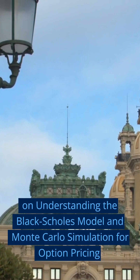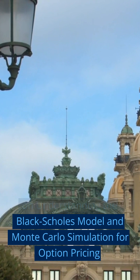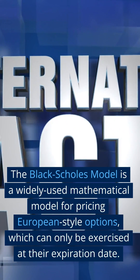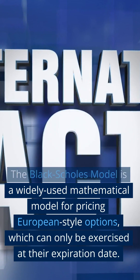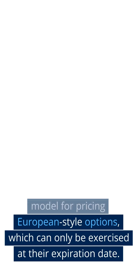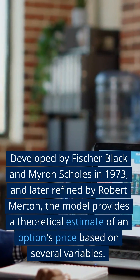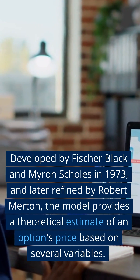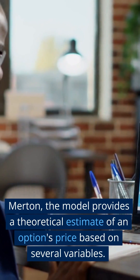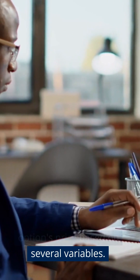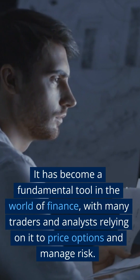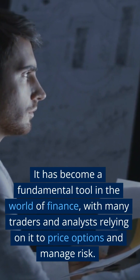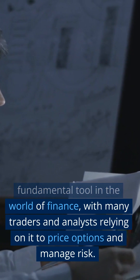On understanding the Black-Scholes model and Monte Carlo simulation for option pricing. The Black-Scholes model is a widely used mathematical model for pricing European-style options, which can only be exercised at their expiration date. Developed by Fisher Black and Myron Scholes in 1973, and later refined by Robert Merton, the model provides a theoretical estimate of an option's price based on several variables. It has become a fundamental tool in the world of finance, with many traders and analysts relying on it to price options and manage risk.